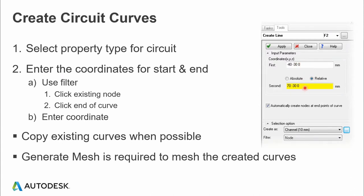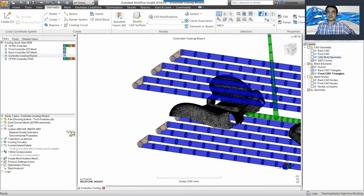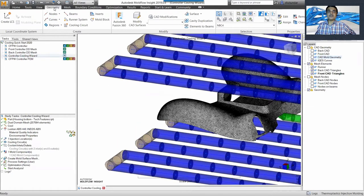As you create the curve you can assign attributes automatically — for example, specify that this channel is 10 mm. You can see it's just a modeling entity; you can assign the attribute after the fact as well. The 'copy the existing curve when possible' and 'generate measure' options are needed to create beams on the curve. In this case I have the cooling channel and I'll start in Geometry with the nodes.